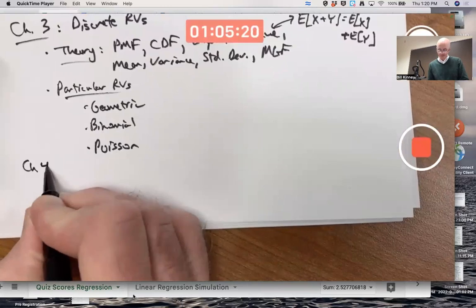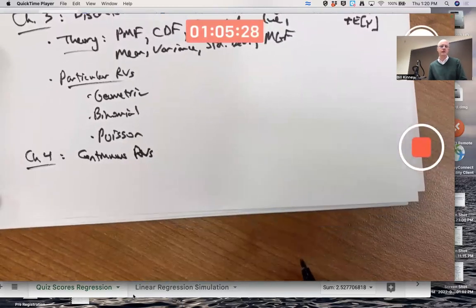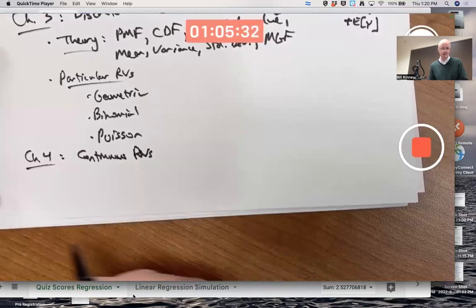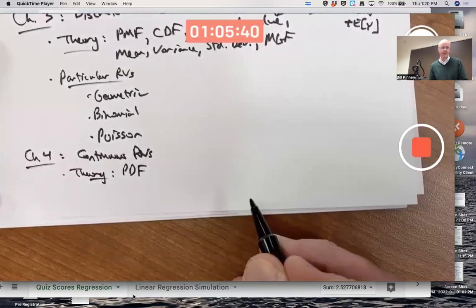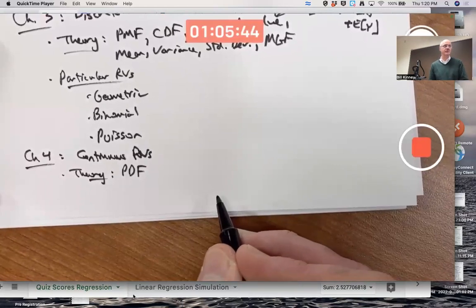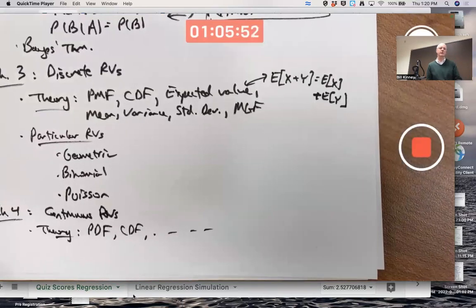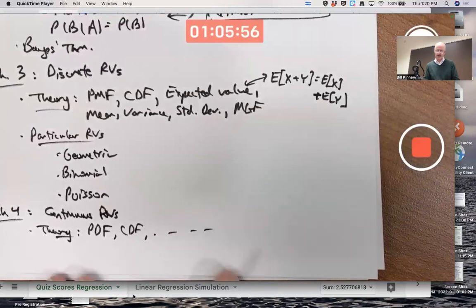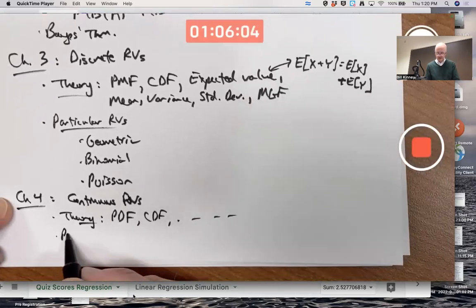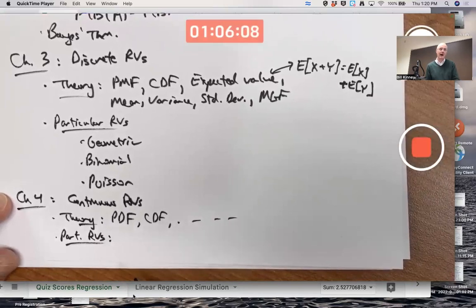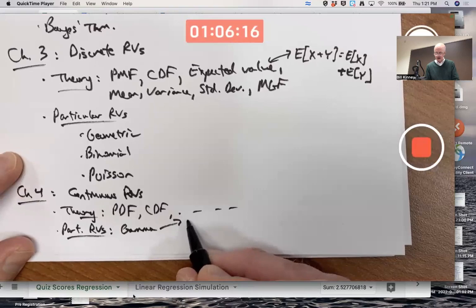Chapter 4. Continuous random variables. Got it right messy here. That says continuous random variables. Again, we have the theory. Now we call them PDFs. Probability density functions whose values do not give you probabilities. You have to integrate them to find probabilities. Still CDFs. Still the other stuff as well. That have the same kind of general formulas, but to use the general formulas, you have to do integrals now instead of summations. Particular random variables. We started with a complicated one, the gamma distribution. And that led to exponential.